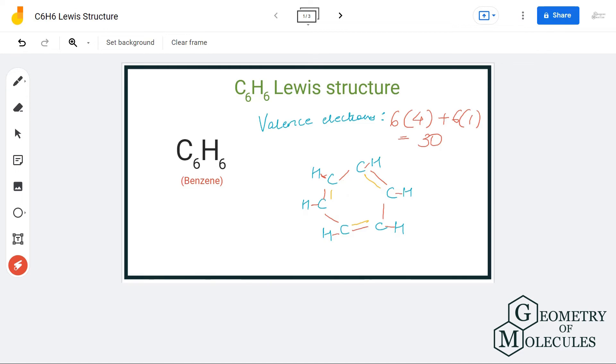Because carbon can form four bonds or has a valency of four, so you have to make sure that you are sticking to it. So this is the Lewis structure of benzene.